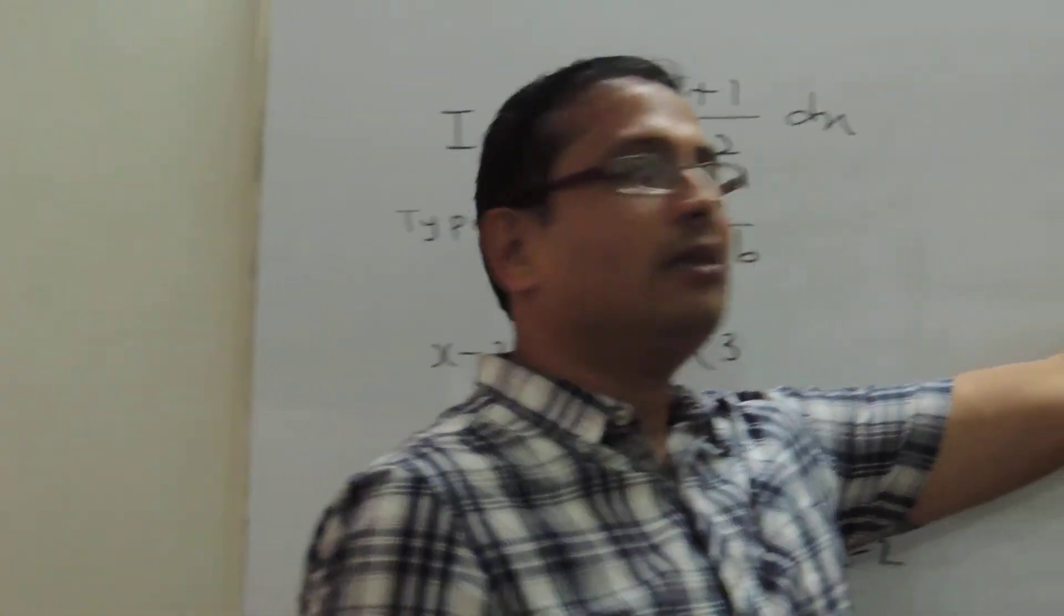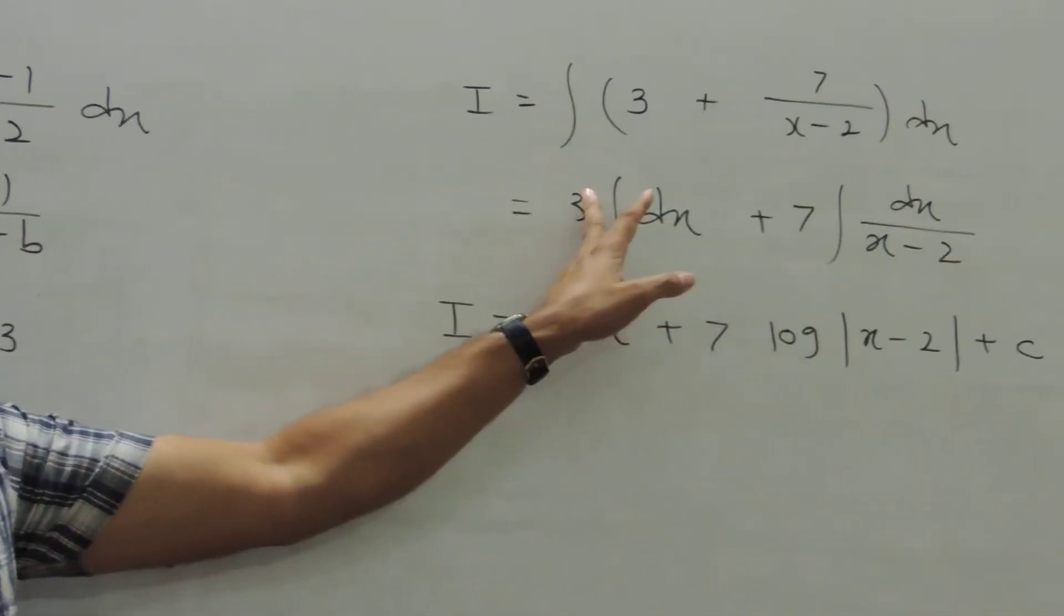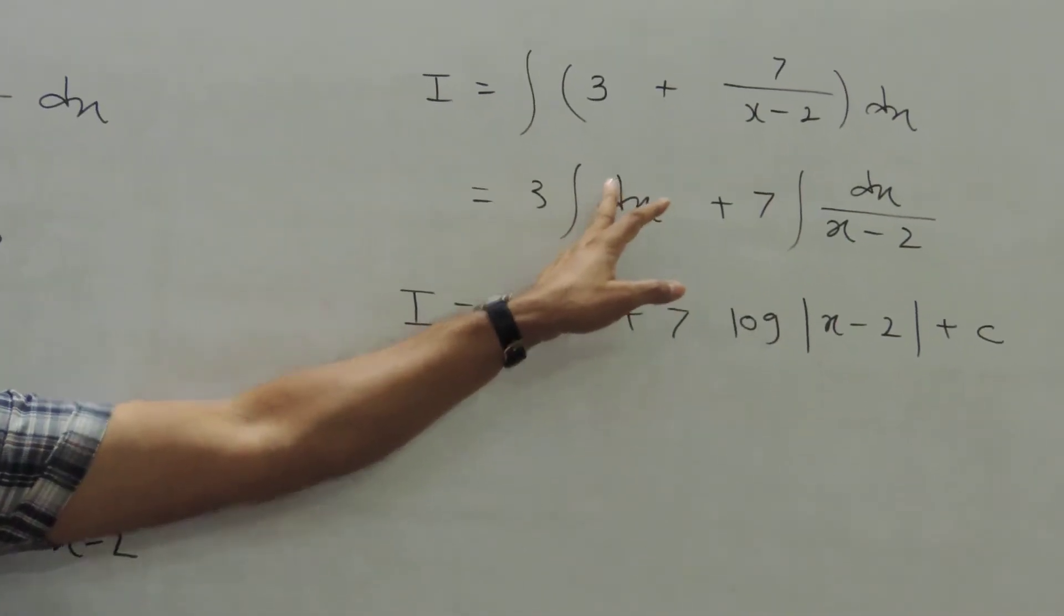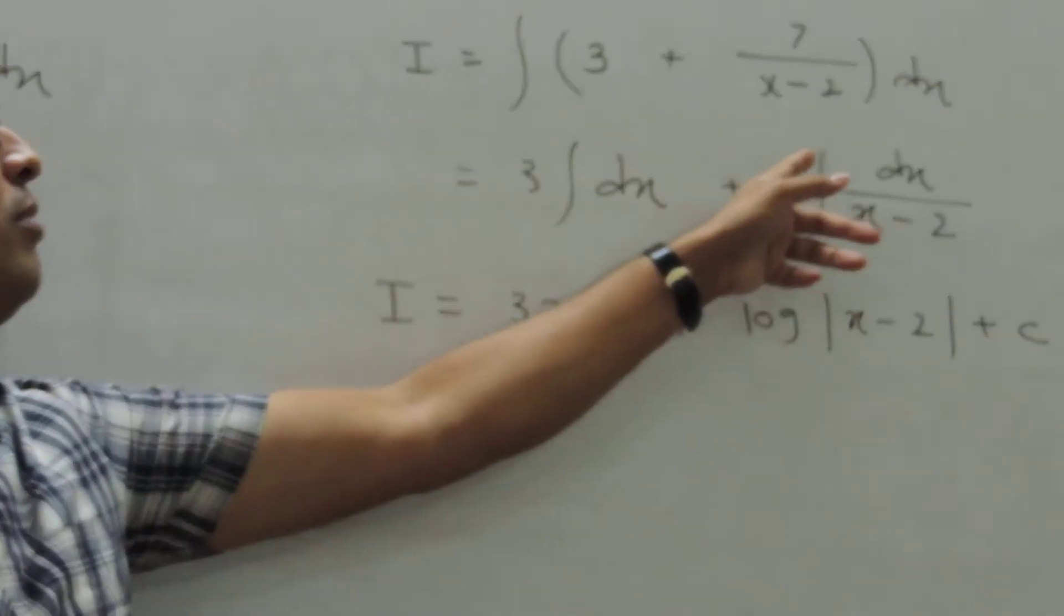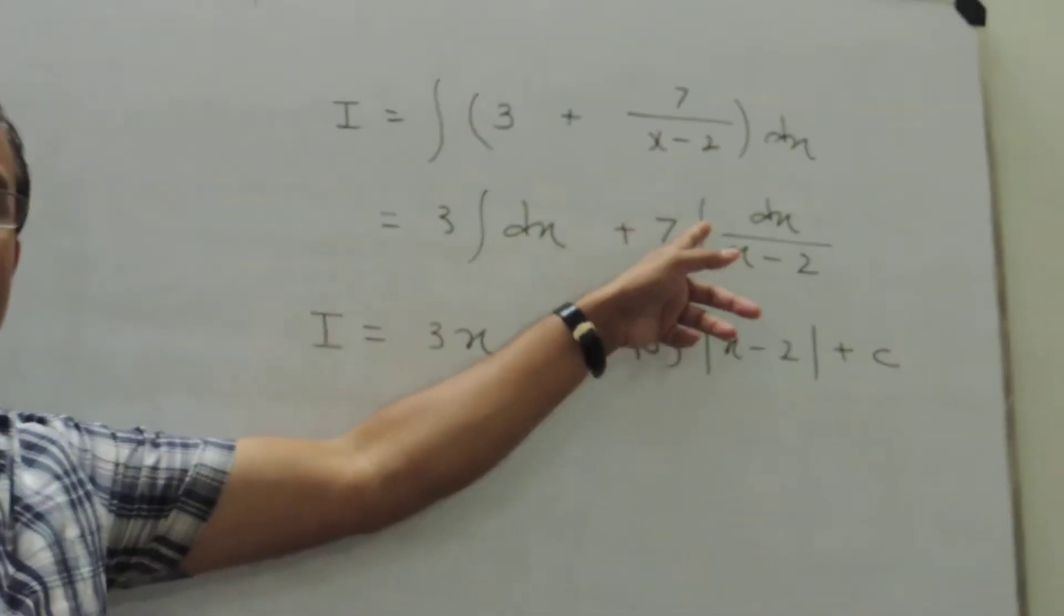Now can we integrate this? The answer is yes. See, integral of constant is that constant into integral dx which is nothing but x. Now, this is 7 integral dx upon x minus 2.